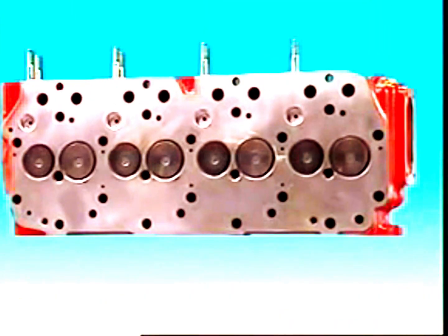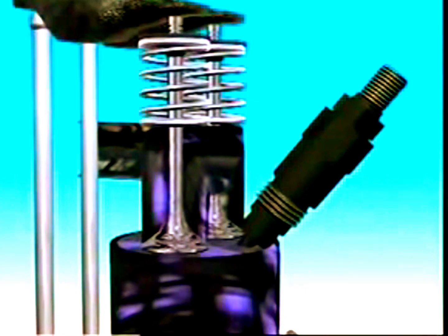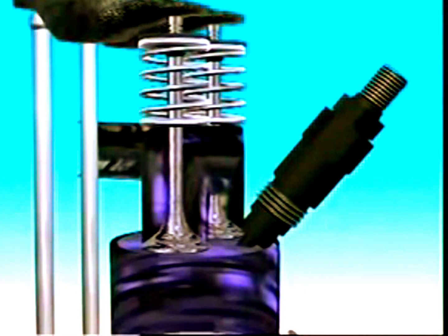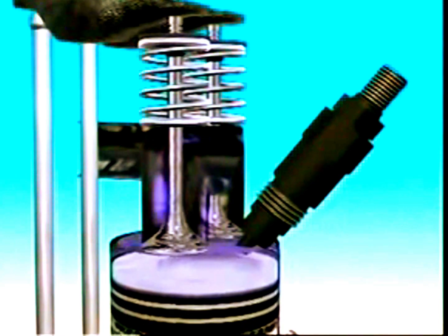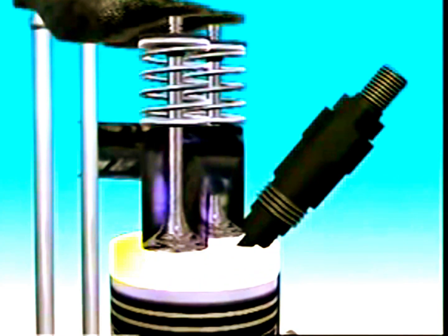Engines using direct injection have cylinder heads with a flat face. The combustion chamber is formed in the top of the piston. Sometimes the rim of the piston provides squish, forcing the air to the center of the combustion chamber. This causes turbulence as fuel is injected into the cylinder.